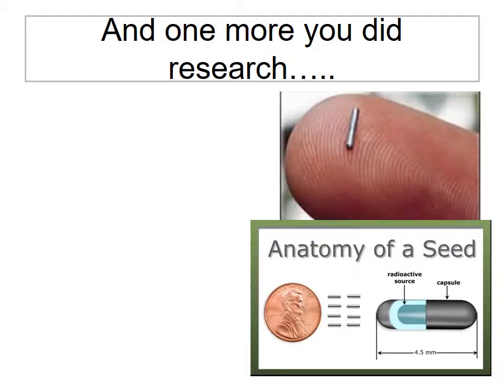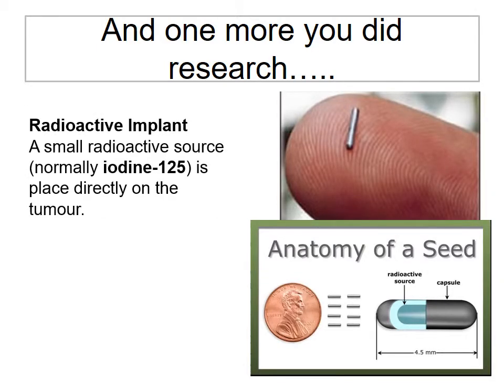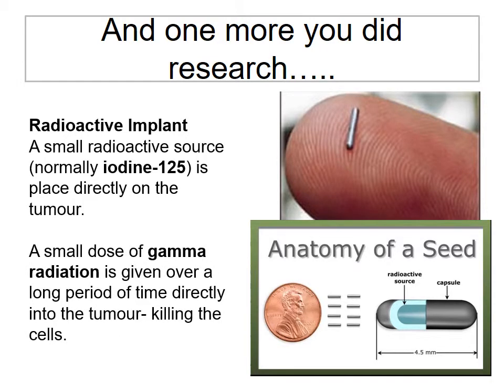Another technique is radio implants — usually a small radioactive source placed directly near the tumour, so it hits it with a small dose of gamma radiation over a long period of time, killing the tumour cells.